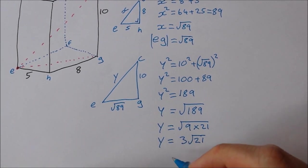Or if you want to write it as a decimal, Y is equal to 13.75. That's correct to two decimal places.